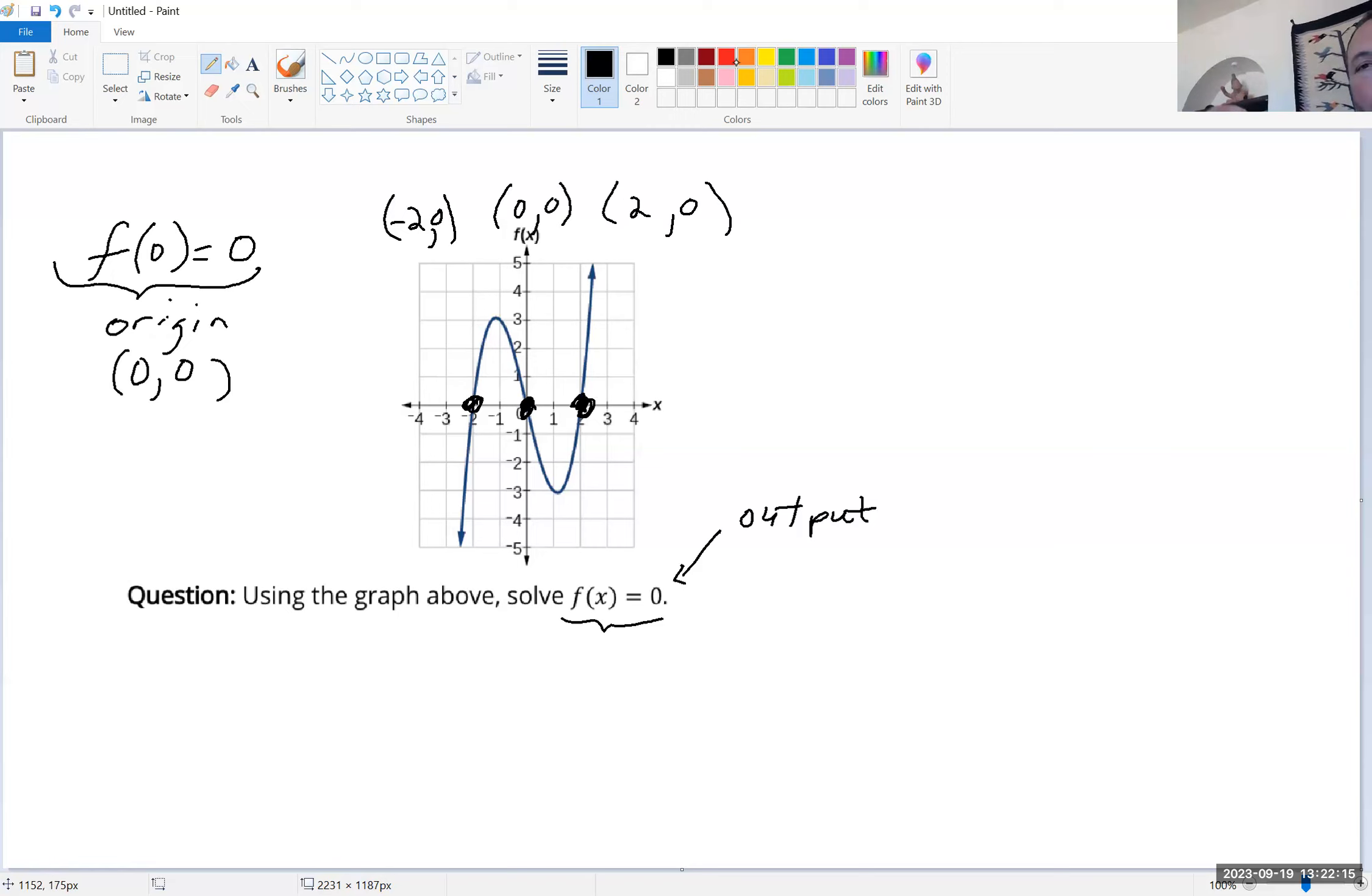So here we're referring to three outputs, just like we're referring to the output here. And so the inputs that are associated with those are negative two, zero, and two. So those are my three solutions. They're actually my three zeros, but they're my three solutions to f of x equals zero.